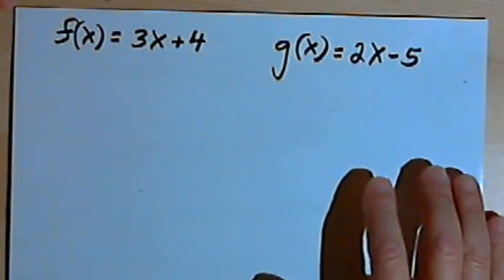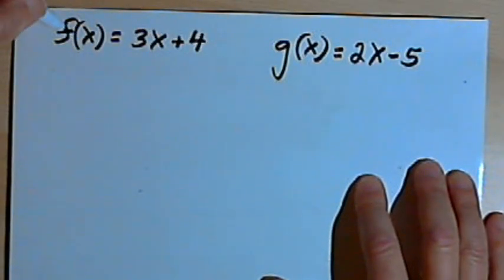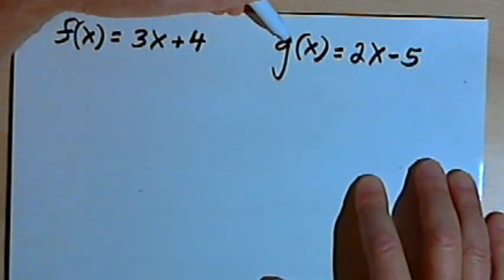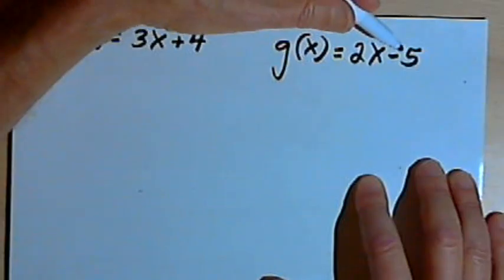Let's say I've got two functions, f and g. Function f is f of x equals 3x plus 4, and g of x equals 2x minus 5.